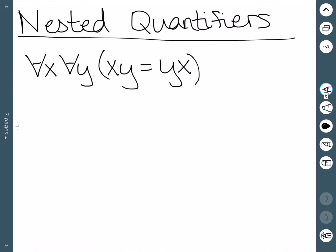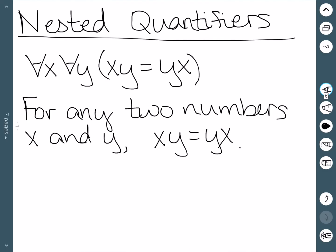We'll now look at nested quantifiers. What this means is using more than one quantifier at once, like this example here, which basically says for any two numbers x and y, xy is equal to yx. So this is just the commutative rule of multiplication, and this is the logical way to write it.